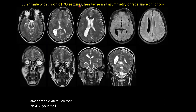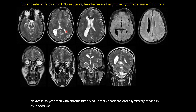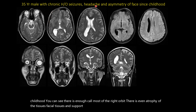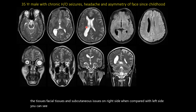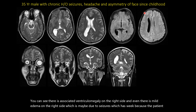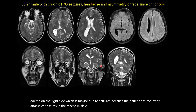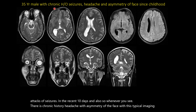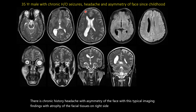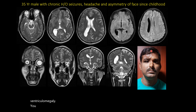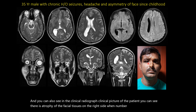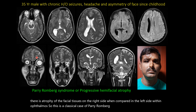Next case: a 35-year male with chronic seizures, headache, and facial asymmetry since childhood. There is enophthalmos of the right orbit, atrophy of facial and subcutaneous tissues on the right side, associated ventriculomegaly on the right side, and mild edema possibly due to recurrent seizures. The clinical photograph confirms atrophy of right-sided facial tissues with enophthalmos. This is a classical case of Parry-Romberg syndrome, or progressive hemifacial atrophy.